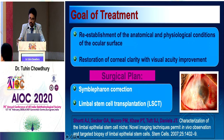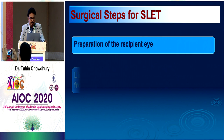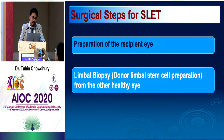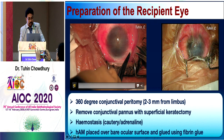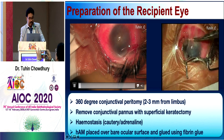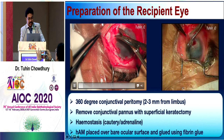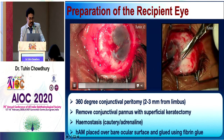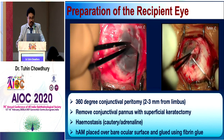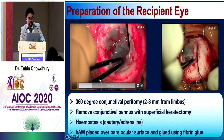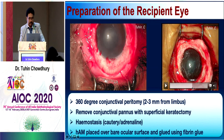Surgical steps of SLET: preparation of recipient eye, limbal stem cell preparation from the healthy fellow eye, and distribution of limbal stem cell transplant on amniotic membrane graft. For recipient eye preparation: perform 360-degree conjunctival peritomy 2–3 mm away from the limbus to avoid damaging any remaining limbal stem cells, then remove corneal pannus with superficial keratectomy. Achieve hemostasis using cautery or adrenalin. Then place human amniotic membrane over the bare ocular surface and glue it using fibrin glue. Always use a blunt spatula to avoid globe perforation.